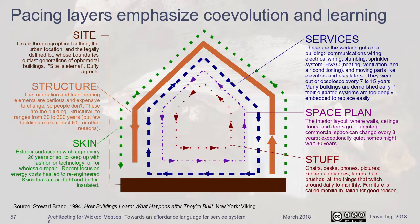When I was talking about processes and structure, this is a way of looking at buildings in terms of process change over time. The pacing layers model starts with a site — the building site is the slowest-changing layer, so site is eternal and you don't change it very often. Next to site, you have structure — the load-bearing walls. After that, you put up the skin, which is the protection of the load-bearing walls on the outside. Inside, you put in the services: the plumbing, the electrical, the venting.